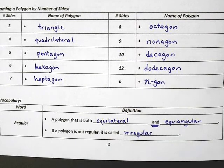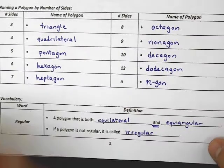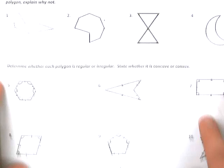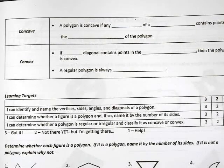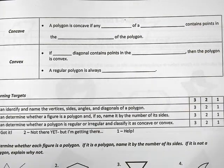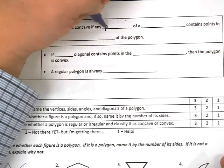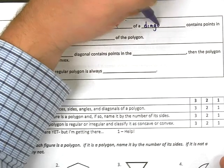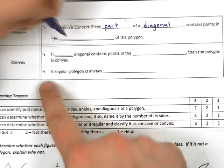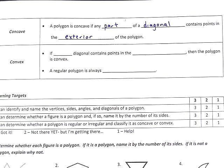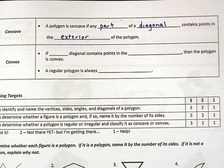I think we have just a couple more definitions, and then we'll get into some practice problems and examples. Concave and convex: a polygon is concave if any part of a diagonal contains points in the exterior of the polygon. So a polygon is concave if any part of a diagonal contains points on the exterior.